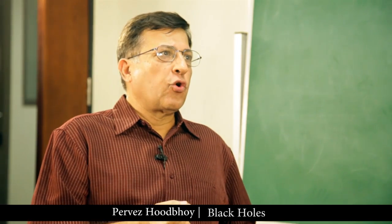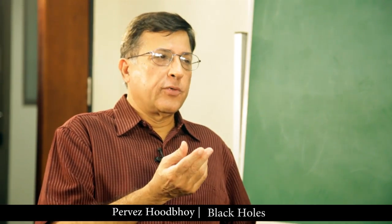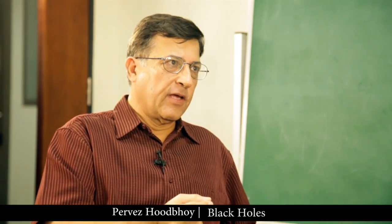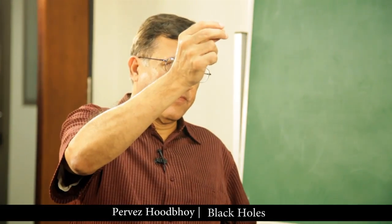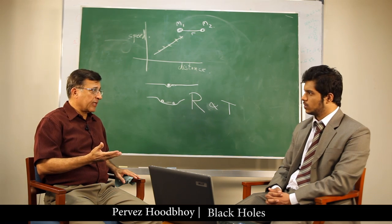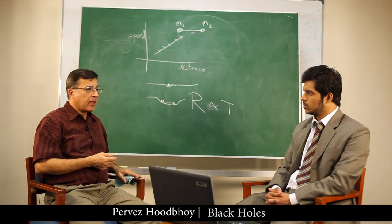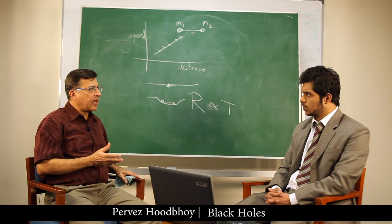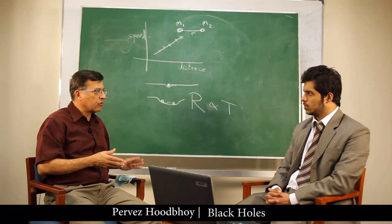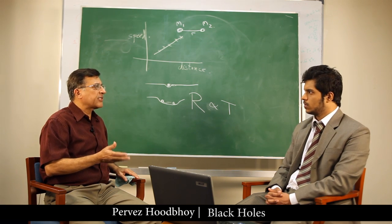Let me tell you a little bit about what the concept is. If I have a stone and I throw it upwards like this, it will go up a little bit and then come down. I throw it harder and it will go further up and then come down. Now suppose that I throw it so fast that it manages to escape from the Earth's gravity. That's a speed of something like 25,000 miles per hour.